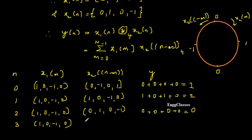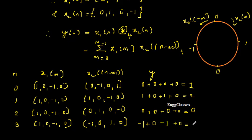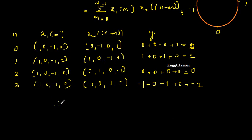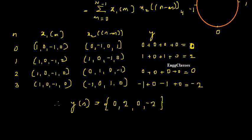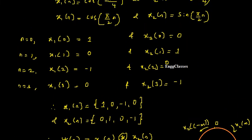Lastly, for n = 3, shift one more time to get x2((3−m)) = {−1, 0, 1, 0}. Multiplying: 1×(−1) + 0×0 + (−1)×1 + 0×0 = −1 − 1 = −2. So y(3) = −2. Therefore, the four-point circular convolution y(n) = {0, 2, 0, −2} for the given inputs x1(n) and x2(n).